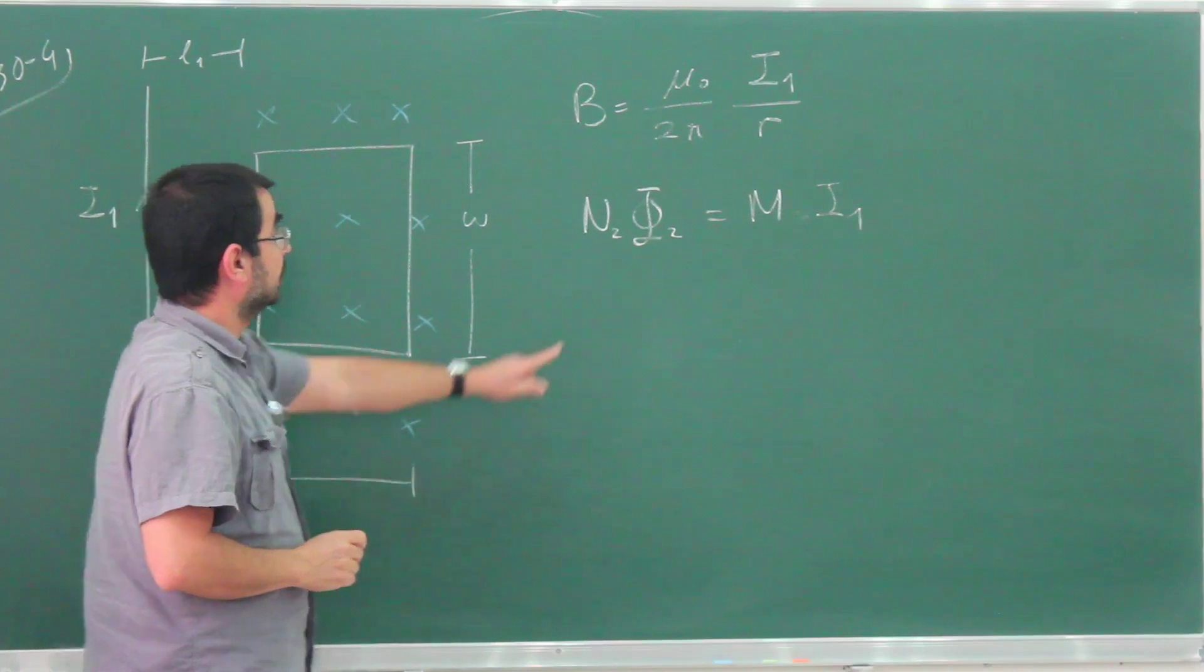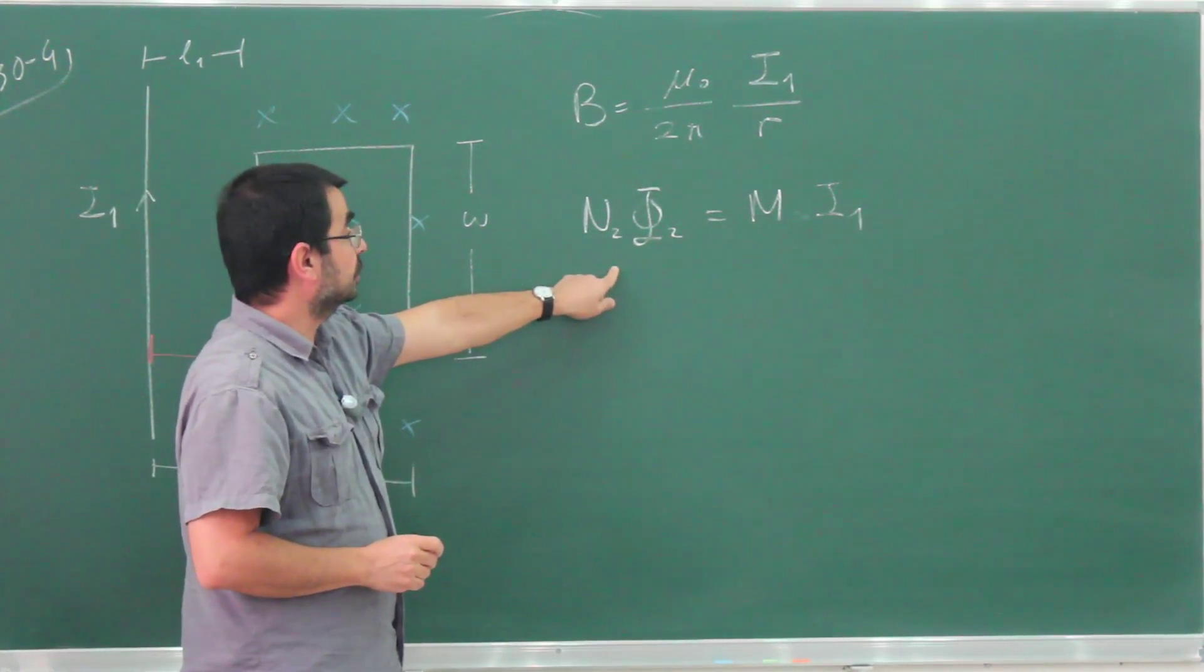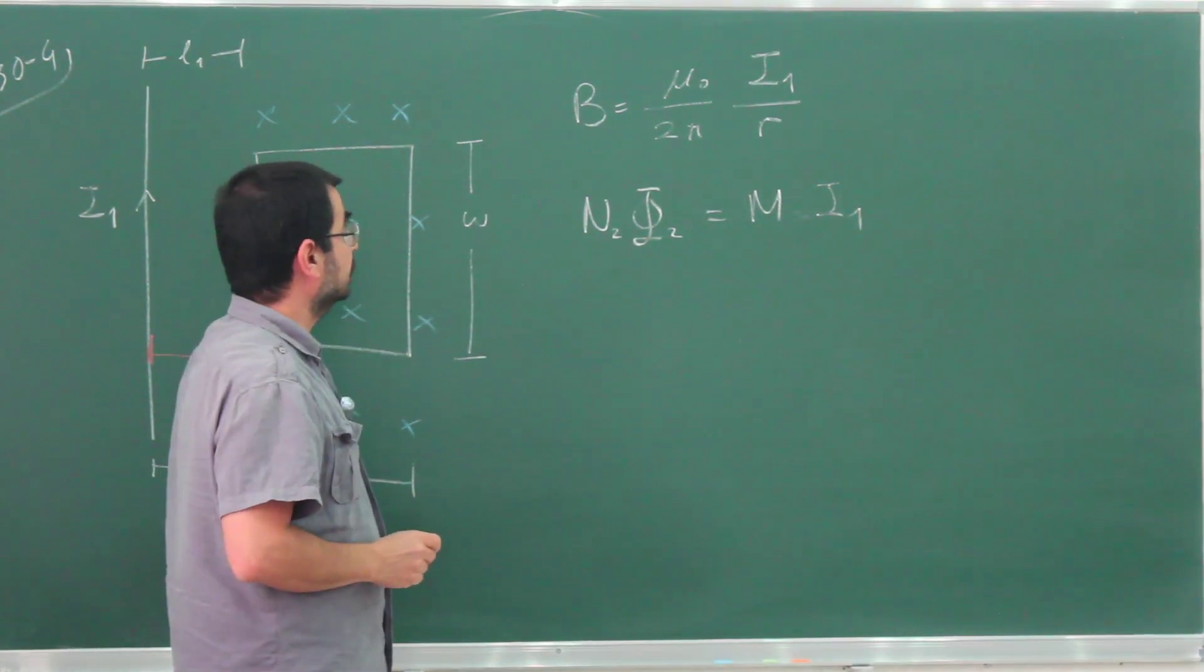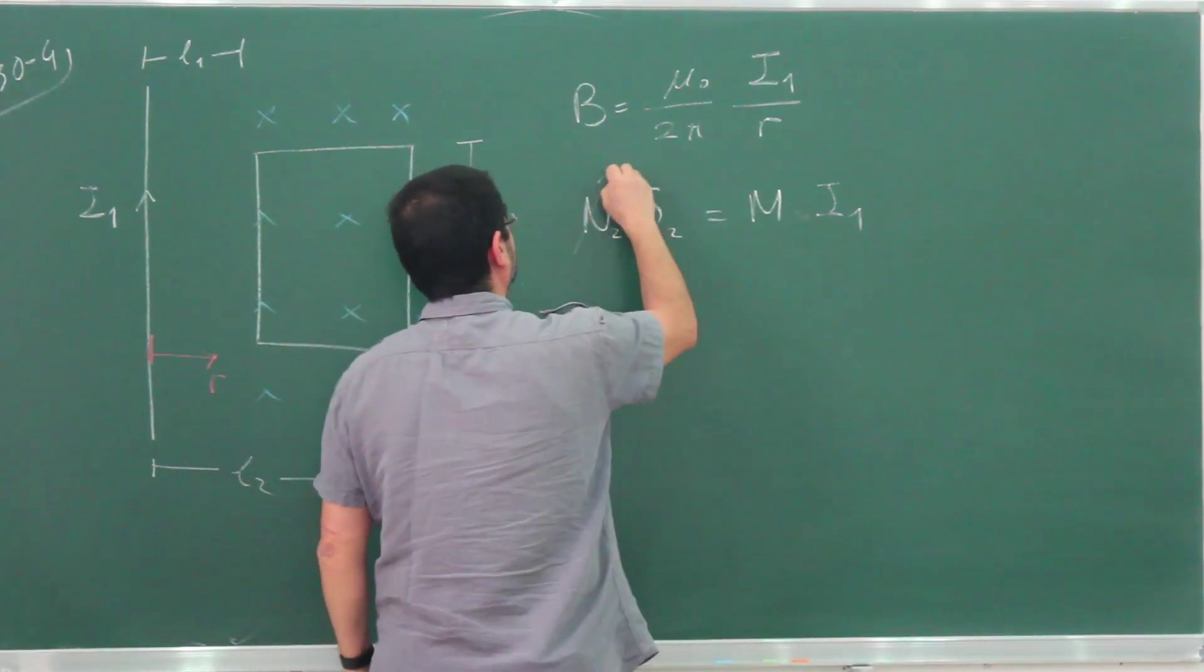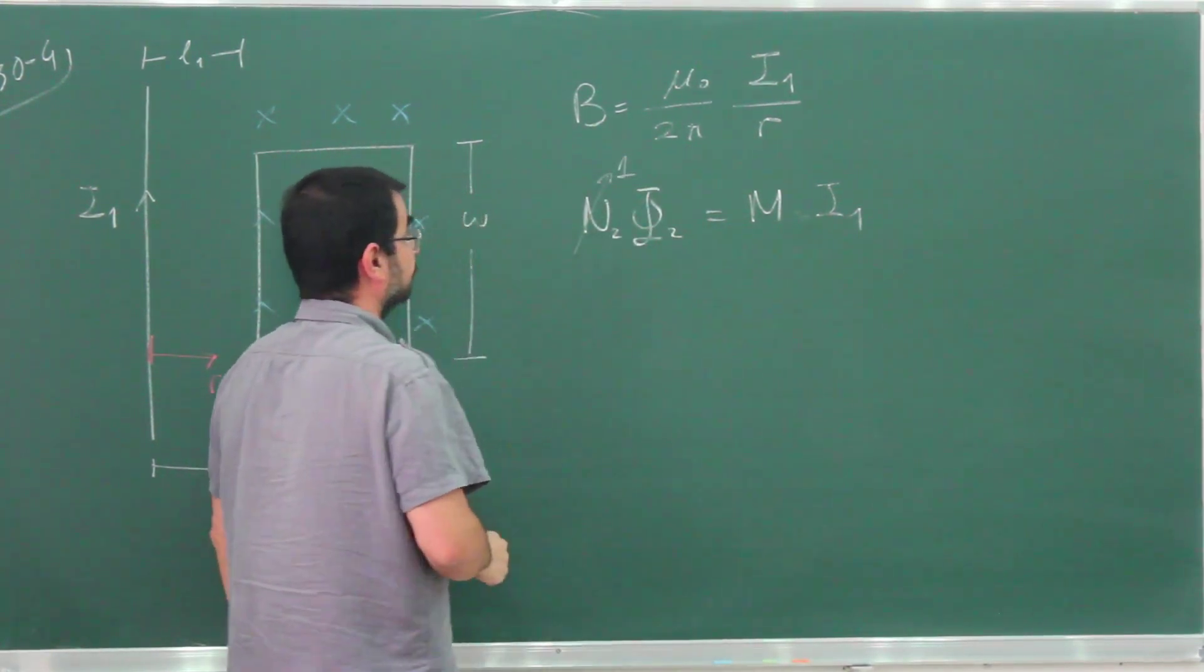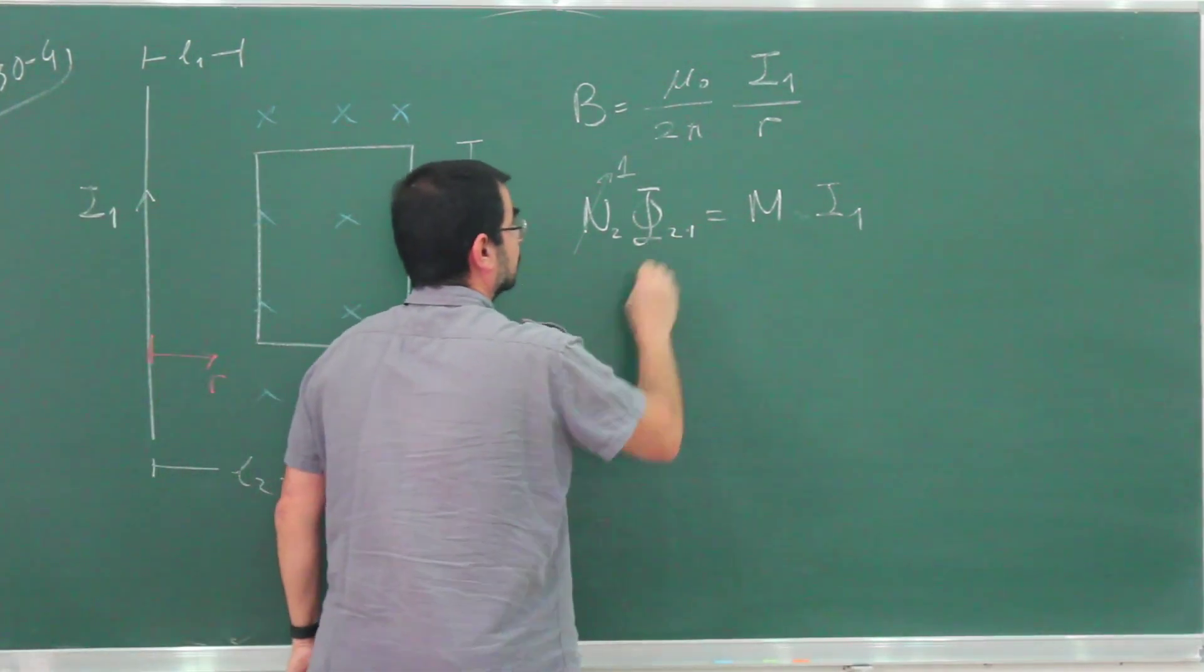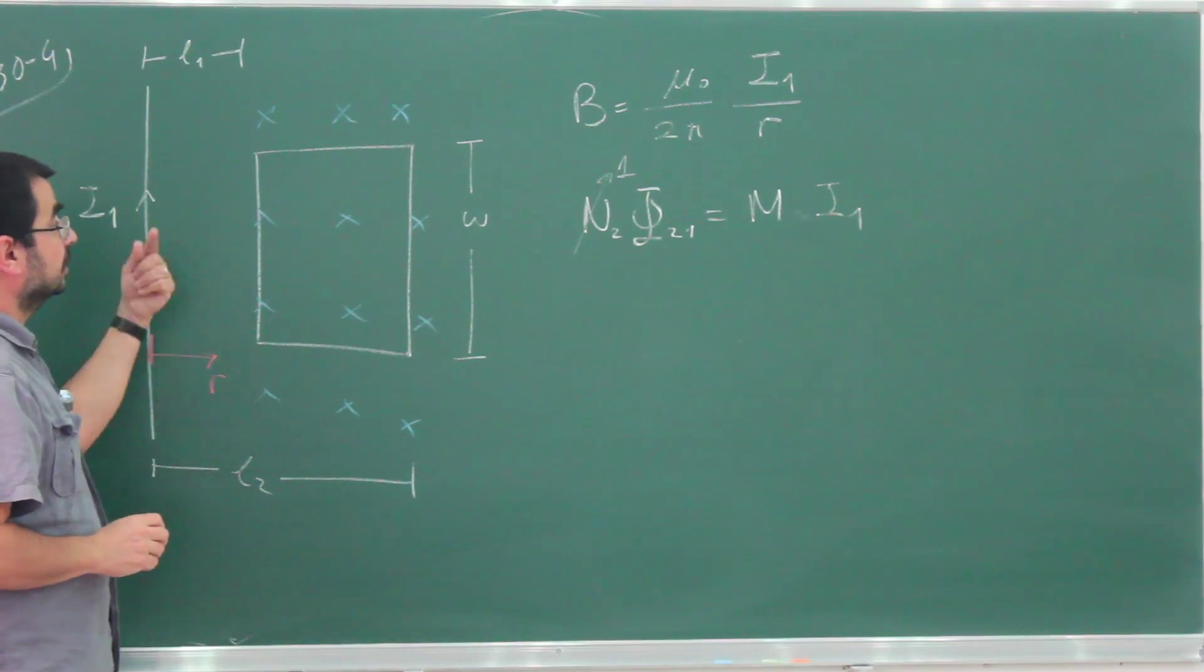So I need to calculate this flux. There's another form of the definition for mutual inductance where you take the time derivative - that's useful experimentally - but this form is useful for theoretical calculations. N2 here is of course 1, so it goes away. To calculate the flux Φ21, indicating it arises from the first current, we need to calculate the magnetic field and the flux.